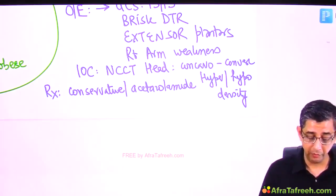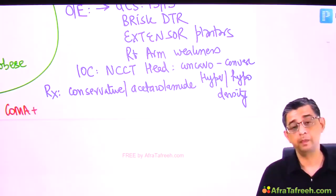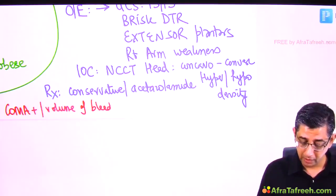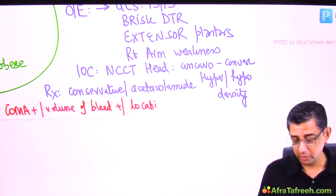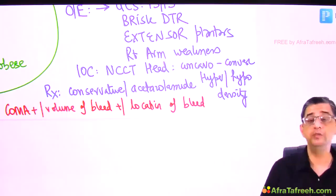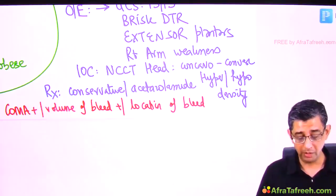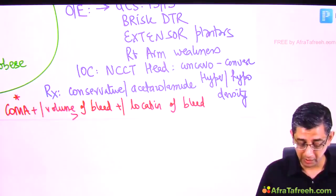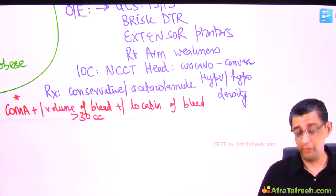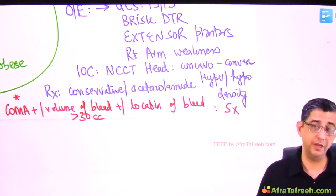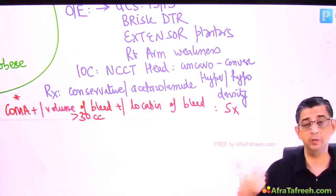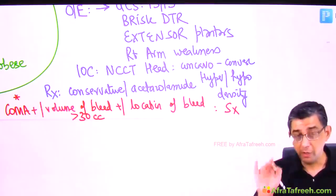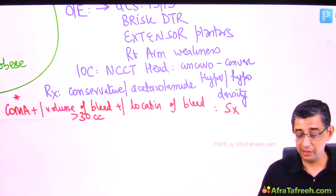Surgical intervention in subdural hemorrhage is indicated when: GCS is low, volume of bleed is more than 30 cc, or the location of bleed is infratentorial. In these cases, the clot pressing on brain parenchyma must be evacuated via craniotomy. The status of the patient determines whether surgery is required.